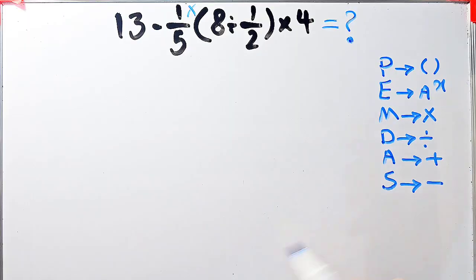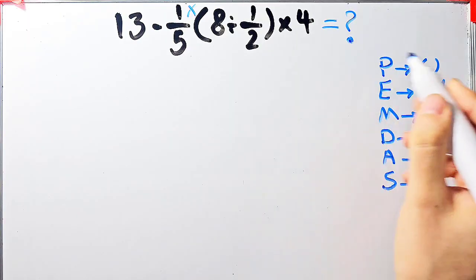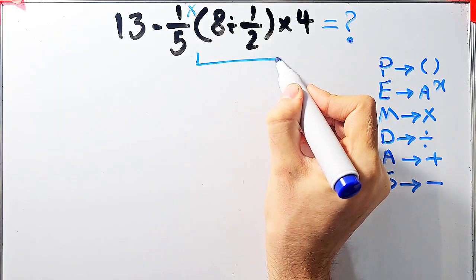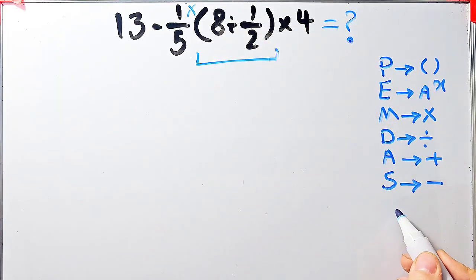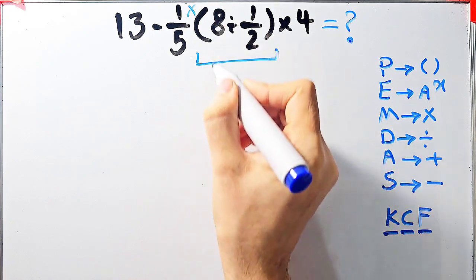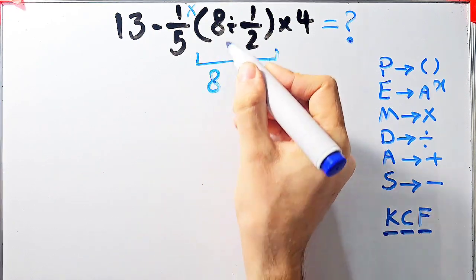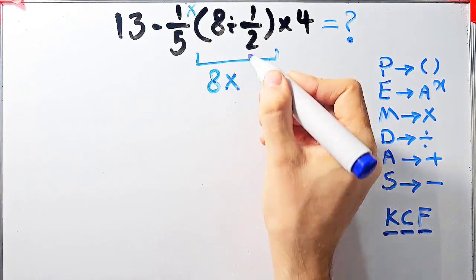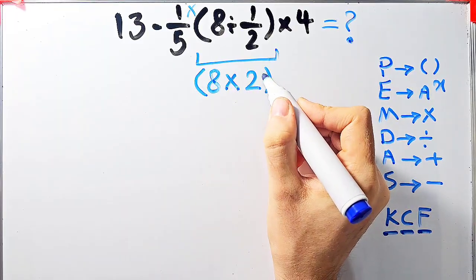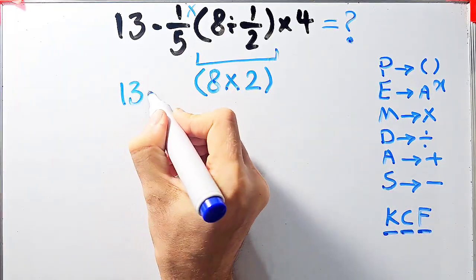According to the PEMDAS rule, first we simplify the parentheses. Inside the parentheses we have 8 divided by 1 over 2. To solve this part we need to follow the KCF rule: K stands for keep, C stands for change, and F stands for flip. We keep the first number as it is, then change the division sign to the multiplication sign, and flip the second fraction.